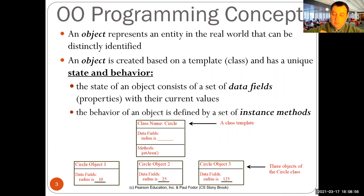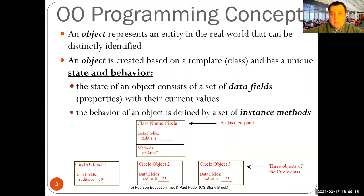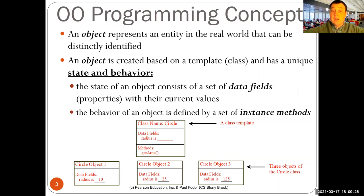In addition to the state, you also have the behavior of the object, which is the set of what are called instance methods. They are the methods that are not defined as static in Java. The non-static methods can only be invoked for a specific object. For instance, a method getArea would use the internal value of the radius to compute the area of the current circle.